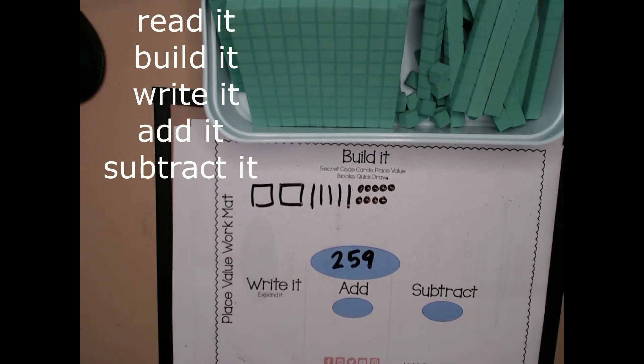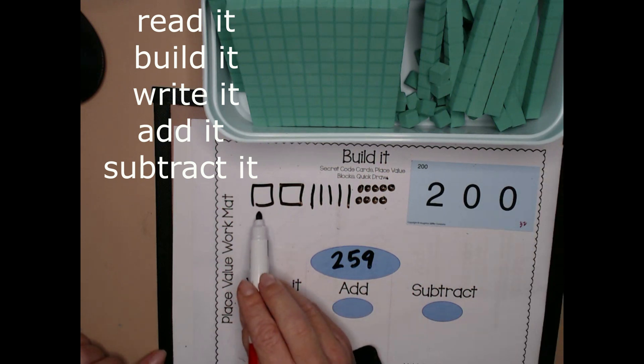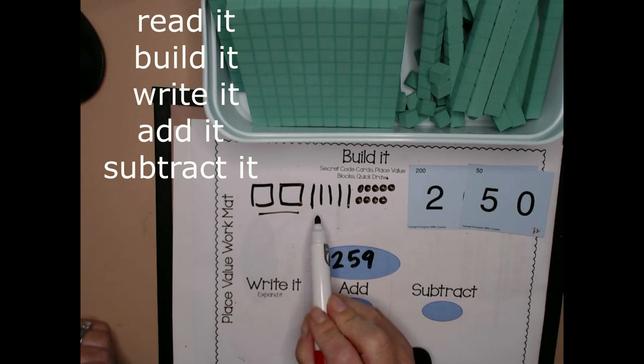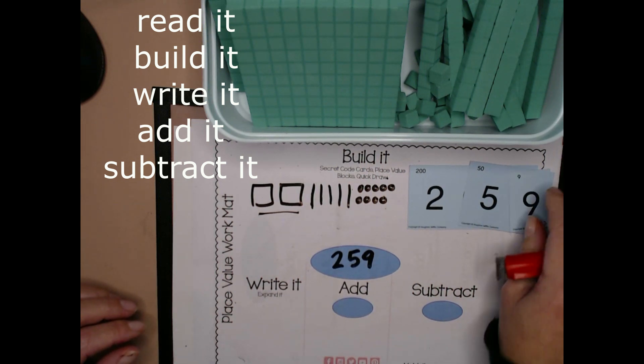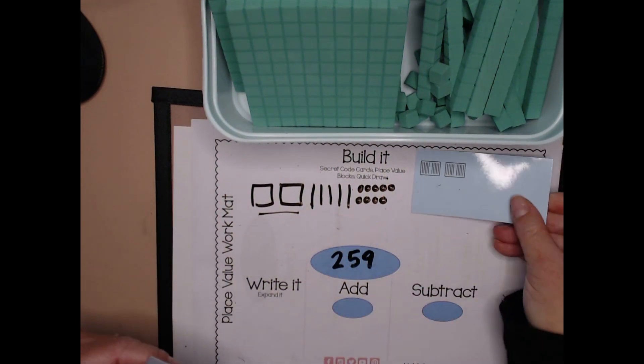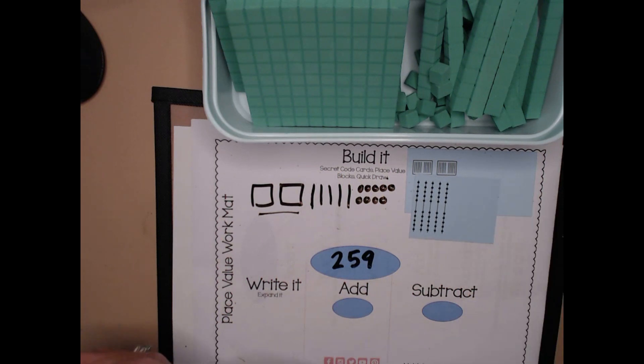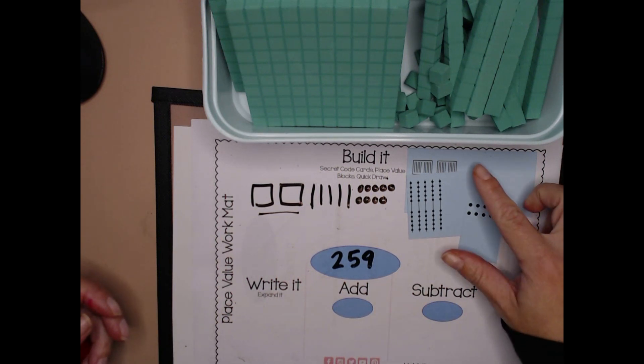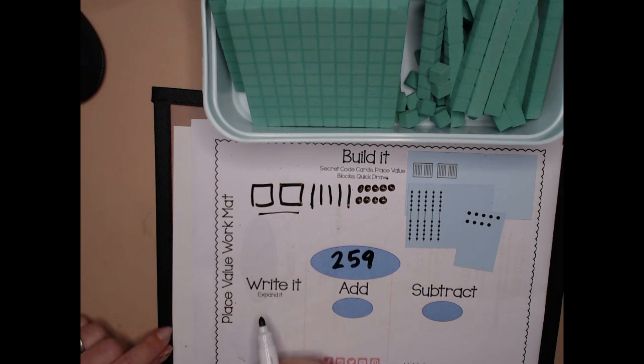Next, I'm going to build it with secret code cards. I have 200s. It matches. I have 5 tens, which is 50. It matches. And I have 9 ones, which matches. If I turn it over, the back of my secret code cards should also show my proof drawing. Next, I'm going to expand it. Let's write the number. It was 200 plus 50 plus 9, and that equaled 259.